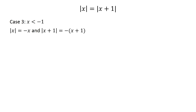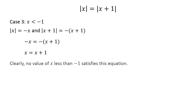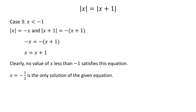Case 3: x less than negative 1. For this interval, the equation becomes negative x equals negative of x plus 1. Cancelling the negative sign from both sides of the equation, we get x equals x plus 1. Just as in Case 1, no value of x less than negative 1 satisfies this equation. This implies that x equals negative one half is the only solution of the given equation.